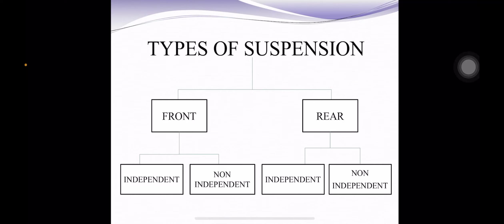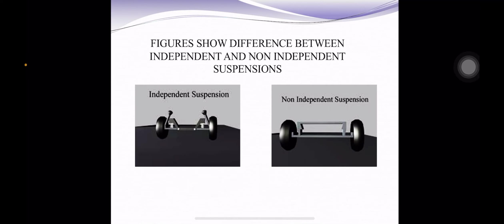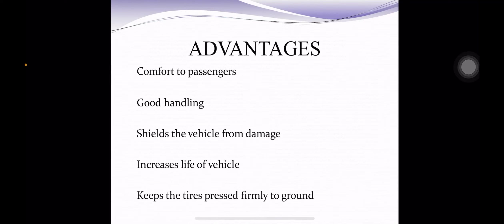There are mainly two types of suspension: front and rear. In the front, there are independent and non-independent types. Similarly, in the rear, there are also independent and non-independent types. These figures show the difference between independent and non-independent suspensions.